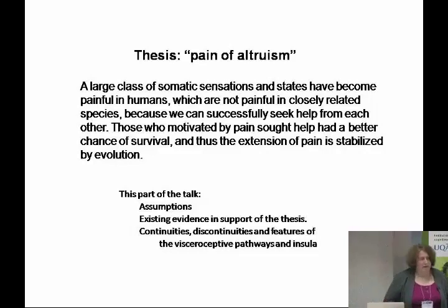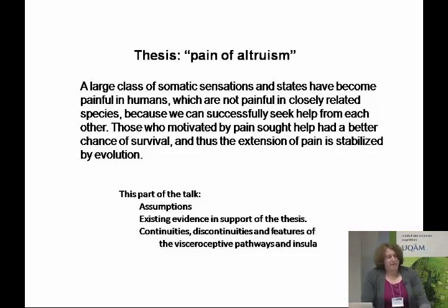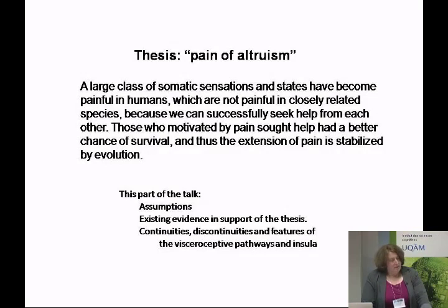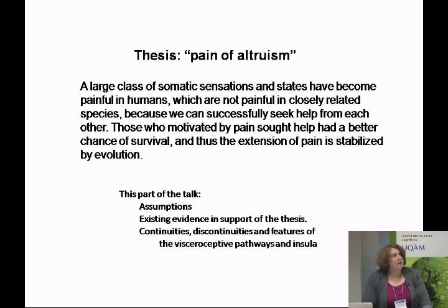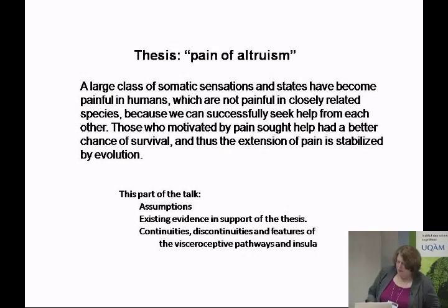Here's the thesis I want to advance: a large class of somatic sensations and states have become painful in humans which are not painful in closely related species, because we can successfully seek help from each other. Those who were motivated by pain and sought help had a better chance of survival, and thus the extension of pain is stabilized by evolution. I want to go over quickly the assumptions that underlie that, then some evidence in support of the theory, and then how you might use comparative neuroanatomy to investigate whether pain systems have actually changed.